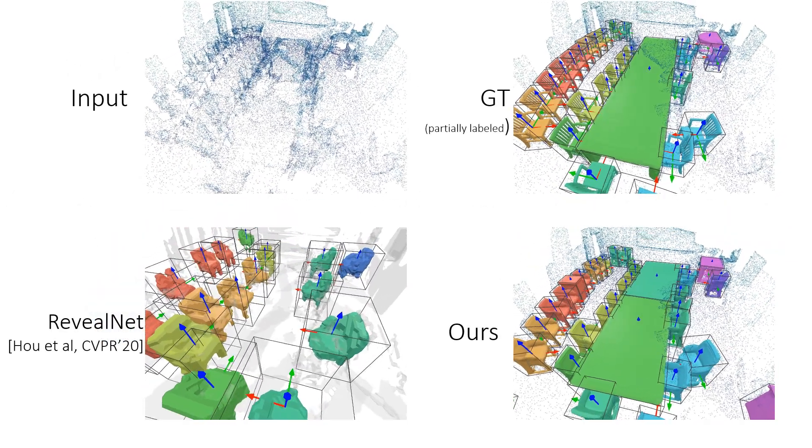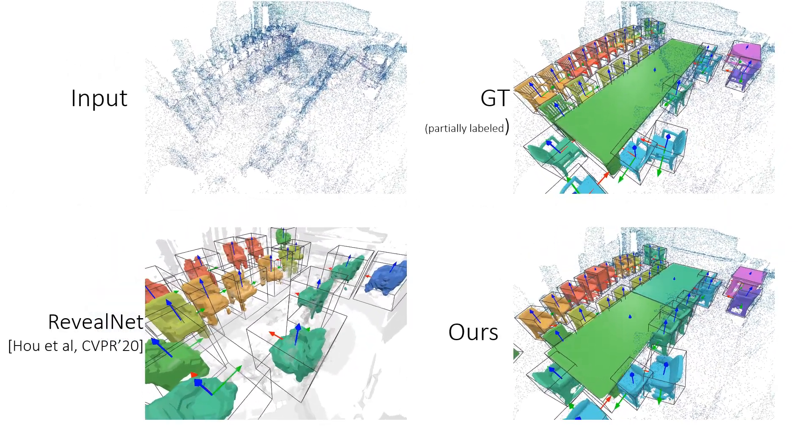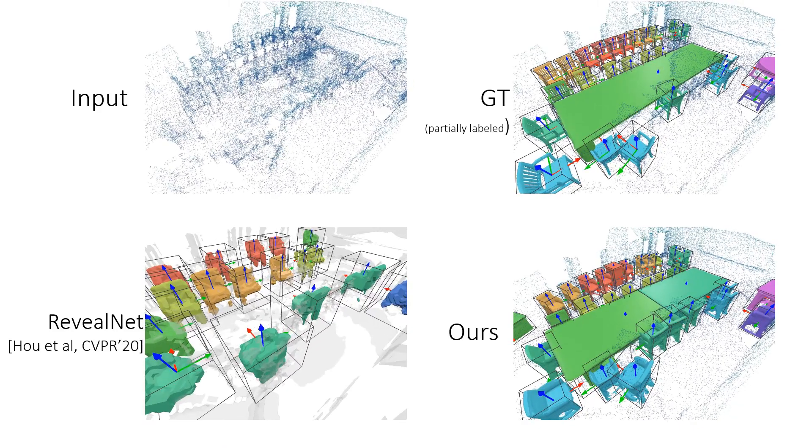Here are some comparisons with state-of-the-art. Note that the ground truth objects are only partially labelled.